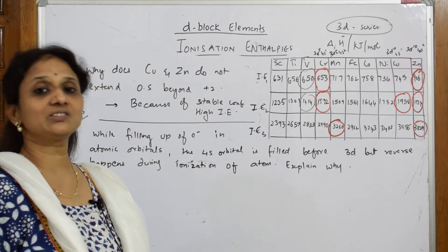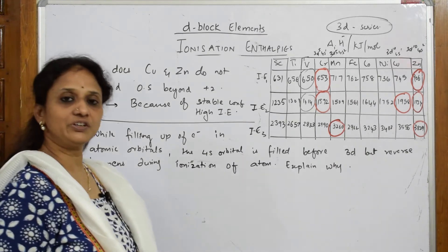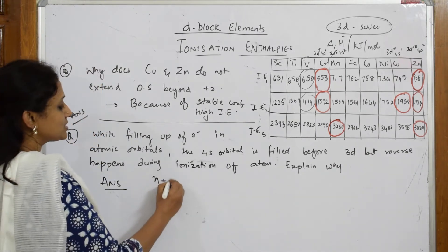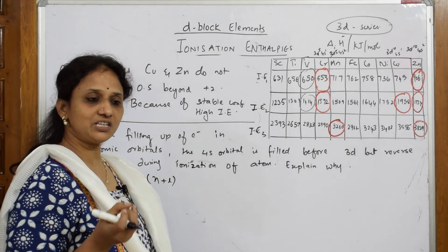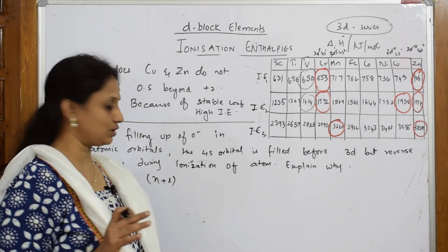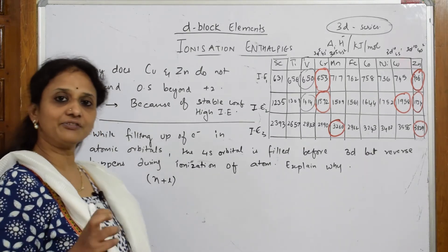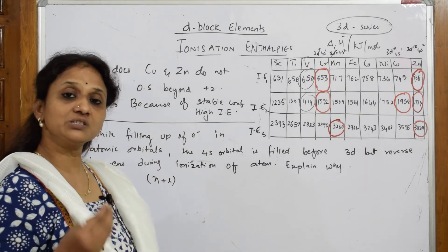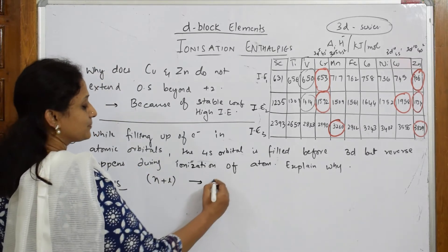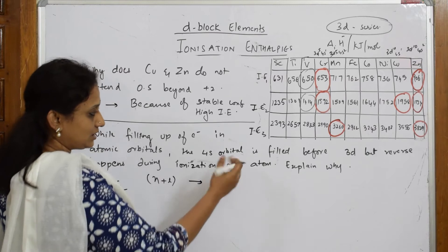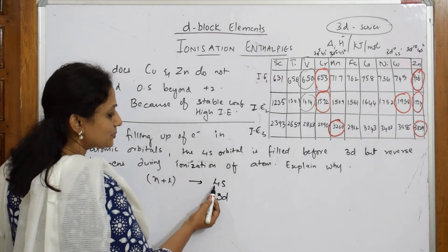Whenever you have to fill an electron, what rule do we follow? We try to follow n plus l rule. What happens? We see that whichever has a minimum value after adding both the principal quantum number and azimuthal quantum number - after adding both, whichever value is minimum, I'm going to fill that first. So let us see for 4s and 3d.